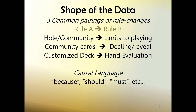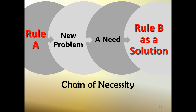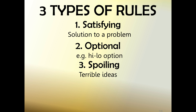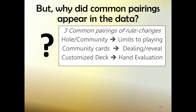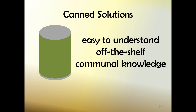This led us to describe the relationship between rules as a chain of necessity. A new rule can introduce a problem in the game — maybe the fairness is compromised. This evokes a need, which another rule can be introduced to address, restoring the integrity of the variant. In light of this respective necessity, we discovered three types of rules. Satisfying rules solved the problems in variants. Optional ones offered new possibilities without a strong tie to necessity. And spoiling rules were rule ideas so bad and so prevalent that they really needed to be called out as a terrible, terrible idea. That explains the relationship between the rules, but it didn't explain why there were common clusters or common pairings.